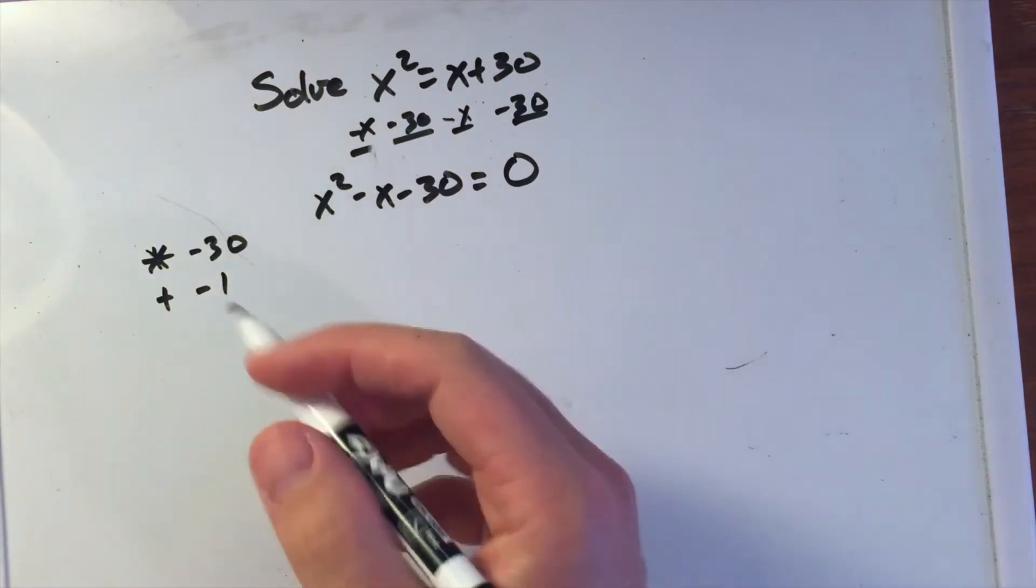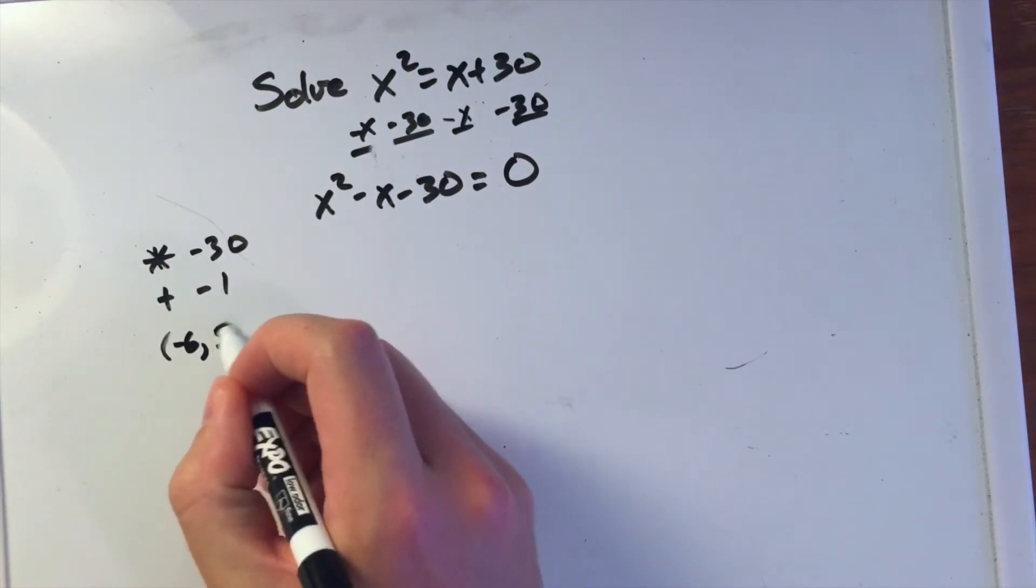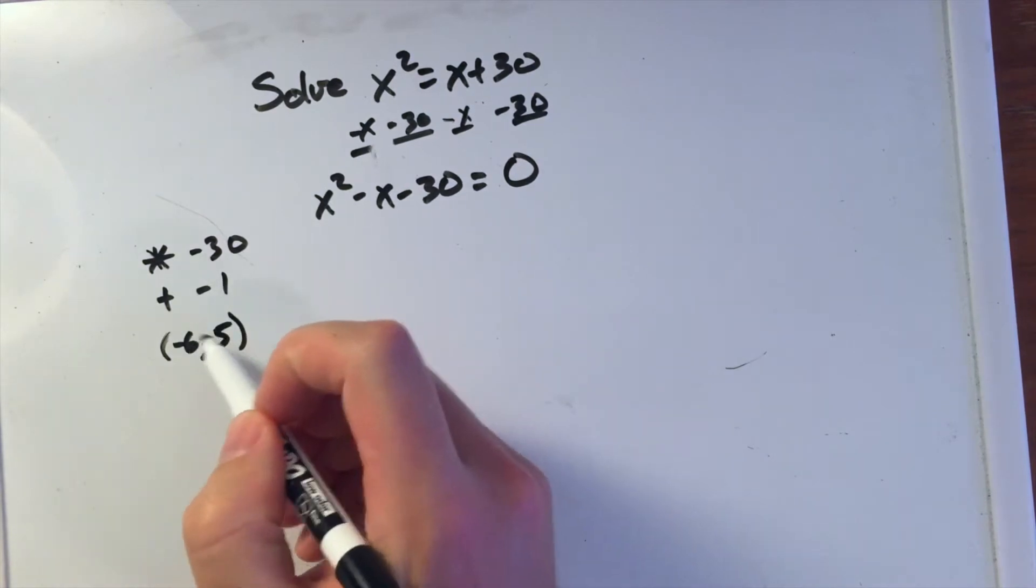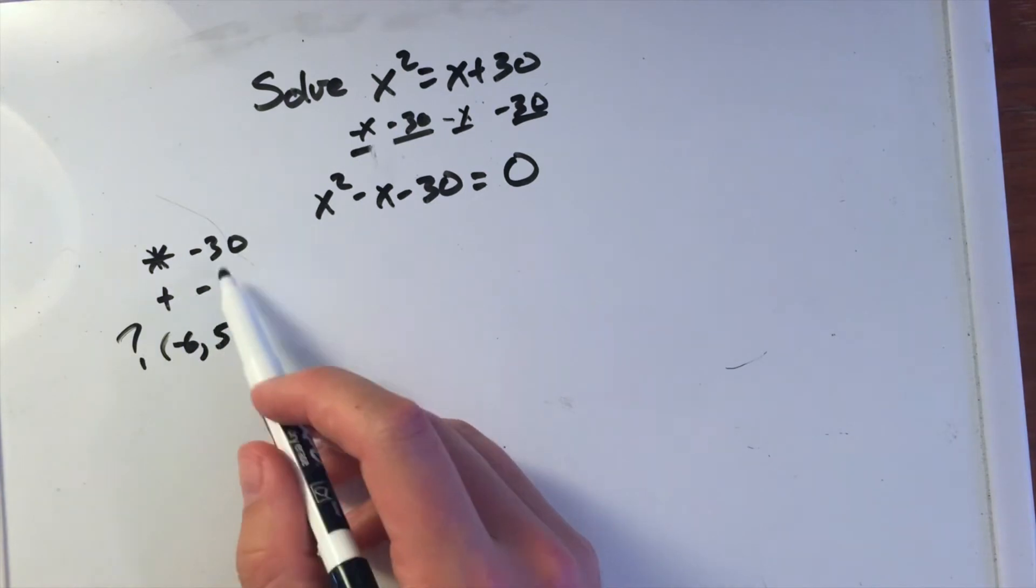What comes to mind here is negative 6 and positive 5. Negative 6 times 5 is negative 30, but when we add these two numbers together, we have negative 1.